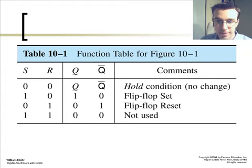Here's a function table for that same flip-flop with your set and reset. You have your zero zero equals a hold condition. There's no change and you have your set equals one and your reset equals zero. It means the flip-flop is set and vice versa. The set equals zero and reset equals one. You have your flip-flop reset and your one one function means there's nothing used.